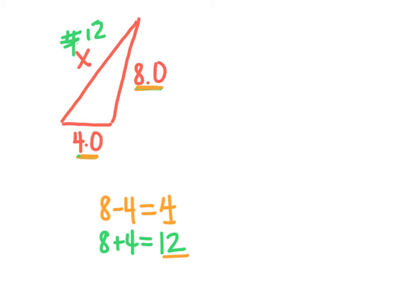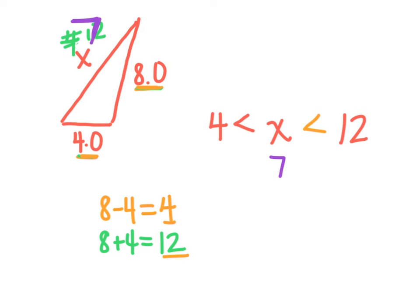To show that, we're going to write an inequality. X can be between four and twelve, so I'll put four and twelve. It has to be bigger than four, and if you look at this, X is bigger than four but it has to be smaller than twelve. So in general, this says X has to be between four and twelve — it can't be equal to four, it can't be equal to twelve. If you want to test that, let's try seven. If you plug seven in for X, add the two smaller sides — seven and four, that's eleven. That's bigger than eight, so it works. So any number between four and twelve.